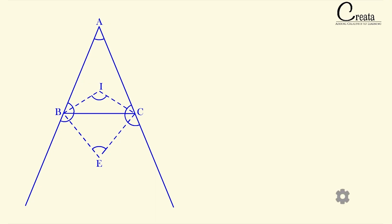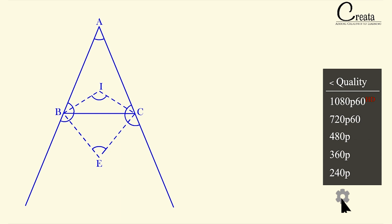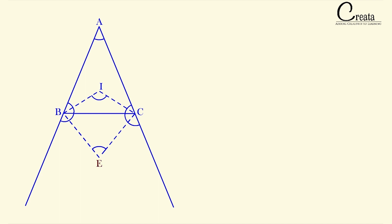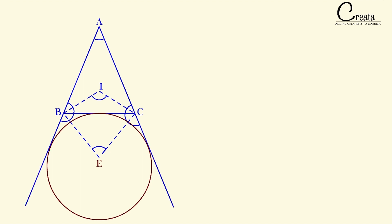Like in the case of in-circle, there is in-center — the center of the circle which is the in-circle. Similarly, here E is the x-center. So this x-center is also the center point of some circle. With the center as E, that is the x-center, we can form a circle which will touch the three sides of the triangle: two are the external sides and one is the main side of the triangle. This circle is known as x-circle.